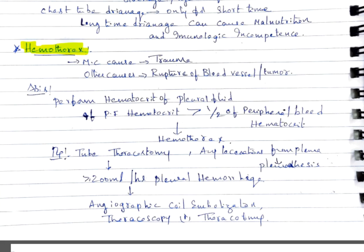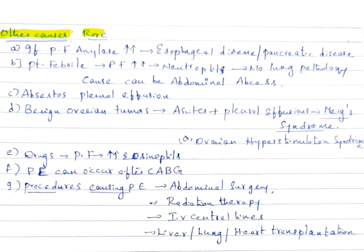Other causes of pleural effusion: if pleural fluid amylase levels are high, it's diagnostic of esophageal disease or pancreatic disease. If patient is febrile and pleural fluid neutrophils are increased with no lung pathology, it can be due to abdominal abscess. Asbestos pleural effusion is another cause. Benign ovarian tumors presenting with pleural effusion and ascites is called Meigs syndrome. Same presentation in ovarian hyperstimulation syndrome. Drugs can cause pleural effusion, diagnosed by more eosinophils in pleural fluid. Pleural effusion can occur post-CABG surgery, abdominal surgery, radiation therapy, IV central lines, and liver, lung, or heart transplantations.